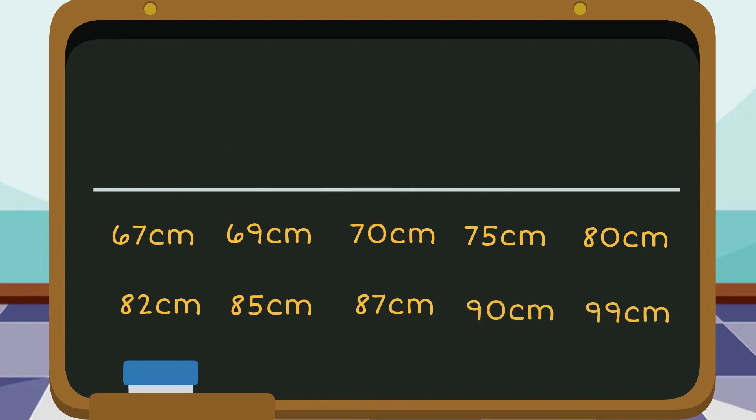Now that we have our heights listed in ascending order, we can see which height is the smallest, which is 67 centimeters, and the largest, 99 centimeters. So now we know how to list numbers in ascending order.